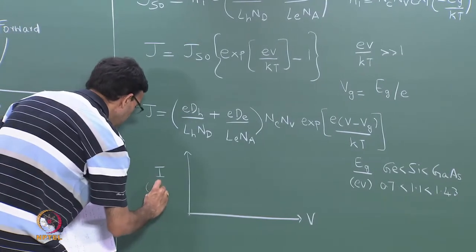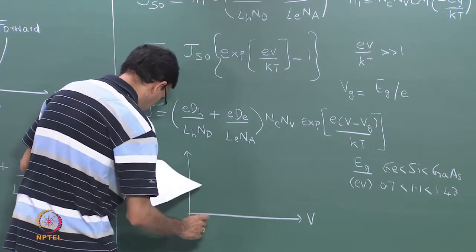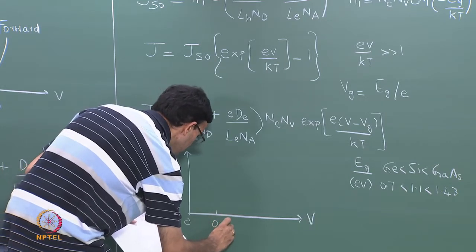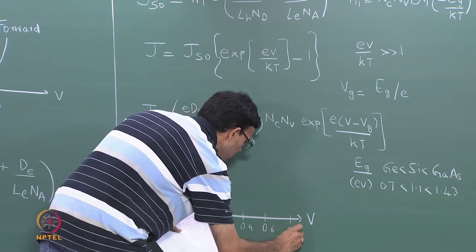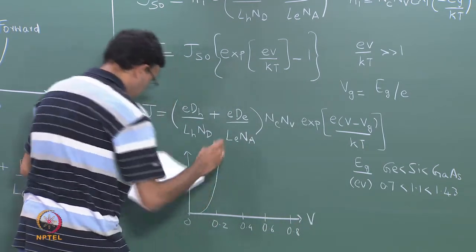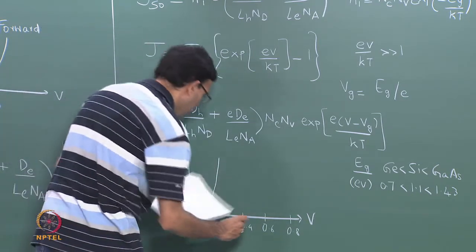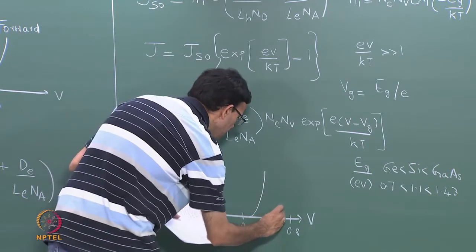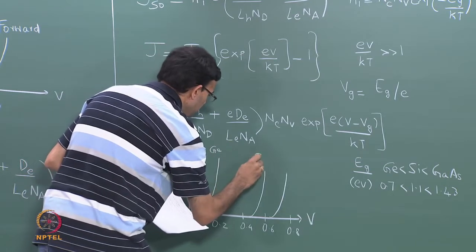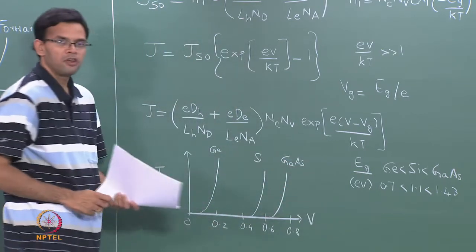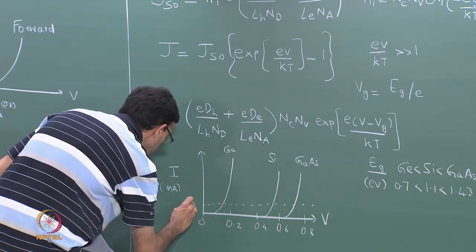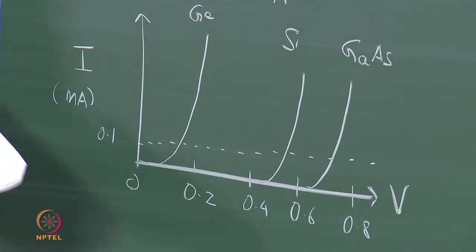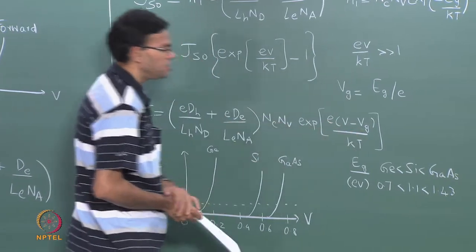With current in milliamps on the y-axis and voltage on the x-axis, the curve for germanium comes first, then silicon, and finally gallium arsenide. So for a given value of current — say 0.1 milliamps — the voltage is lowest for germanium, higher for silicon, and even higher for gallium arsenide. This is because of the V_g term, which is the band gap, in that expression.